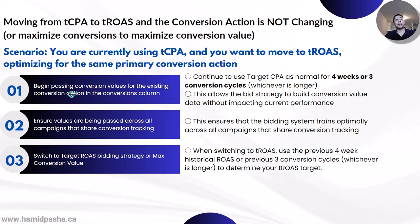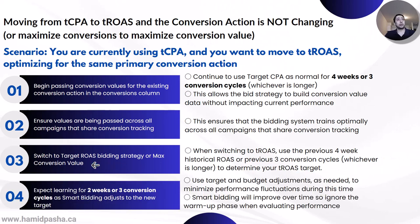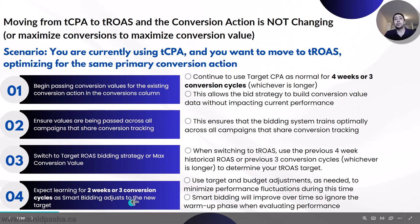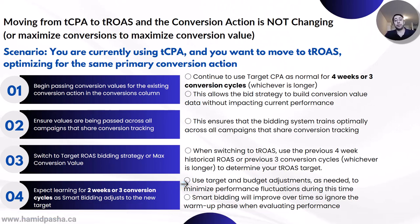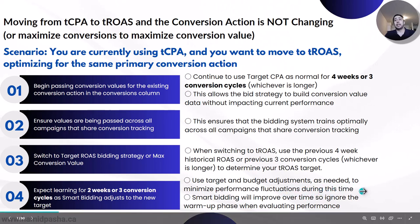Step 3: now that you have passed conversion values and made sure that the values are being passed correctly, it's time to switch to target ROAS bidding strategy or maximize conversion value. When switching to target ROAS, use the data from the previous four weeks of historical ROAS, or previous three conversion cycles, whichever is longer, to decide on your target ROAS target. After switching to target ROAS, you should expect a learning phase for two weeks or three conversion cycles as smart bidding adjusts to the new targets. During that period, you can use target and budget adjustments as needed to minimize performance fluctuations during the learning phase.